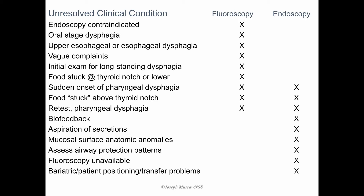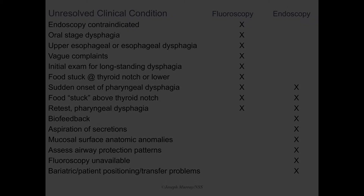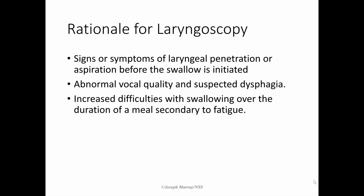Many patients present with signs or symptoms of laryngeal penetration or aspiration before the swallow is initiated, and in these cases we have great confidence that this will be visualized well with the endoscope in place. If we have an open air space and events are occurring within it, the laryngoscope will provide an image of these events. Because the view of the larynx is so good with the laryngoscope, you have an excellent opportunity to look at airway closure and any compromise due to neurologic or structural deficits. Abnormal vocal quality is an important presenting factor when choosing the exam.